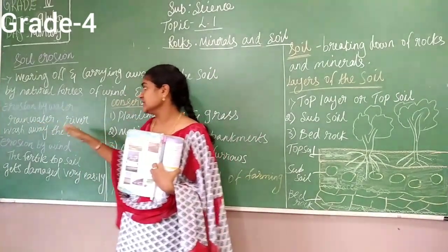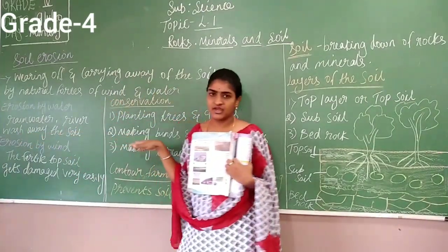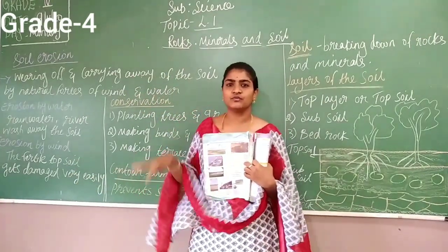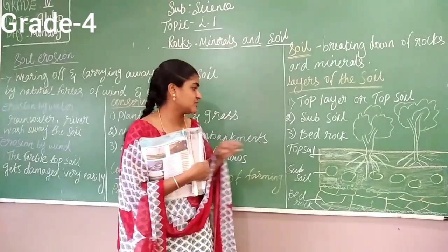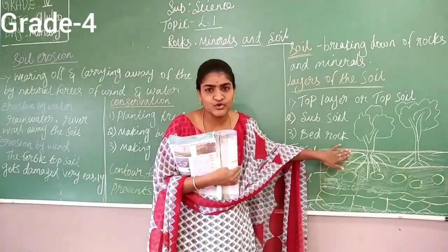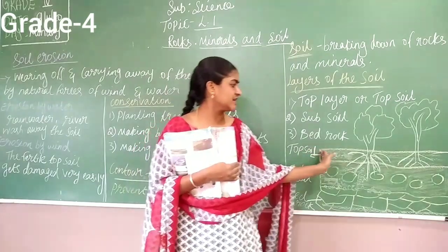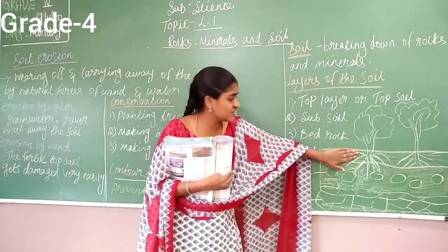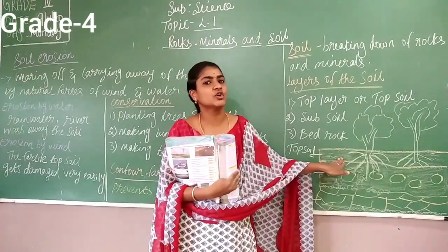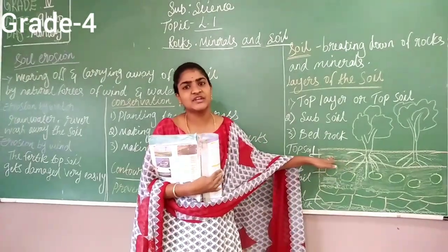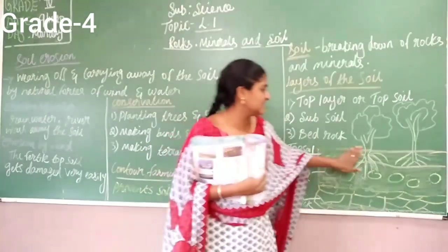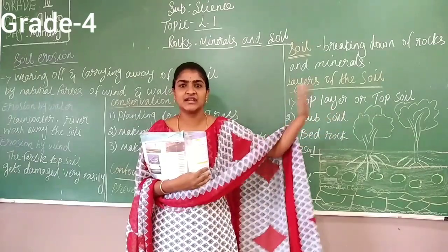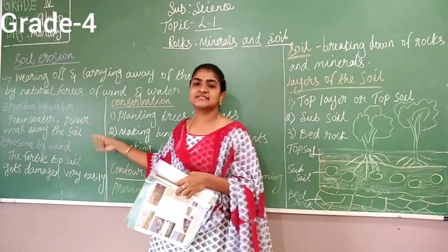Due to rainwater and river water, whatever soil is present in the area gets washed away and reaches some other place. Next, erosion by wind: when there is heavy wind flow, the fertile soil on the top layer — which is very soft and porous — will fly off and settle in some other place. So all the minerals present in the fertile top layer of soil will blow away from agricultural land and go to some other place. Like this, soil erosion happens in two ways: by water and by wind.